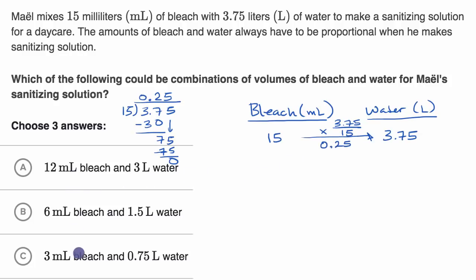So we have to see which of these have the same exact proportionality constant, going from bleach to water. So, let's see, this next one is 12 and 3. So, if we multiply 12 by 0.25, do we get 3? Yeah, 3 is 1 fourth of 12. 0.25 is the same thing as 1 fourth. So this one checks out.